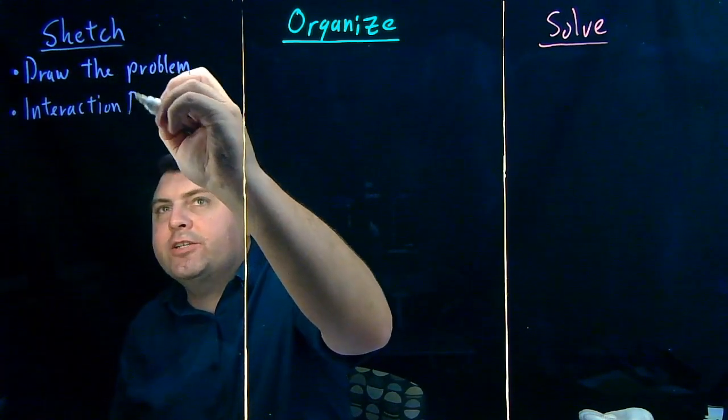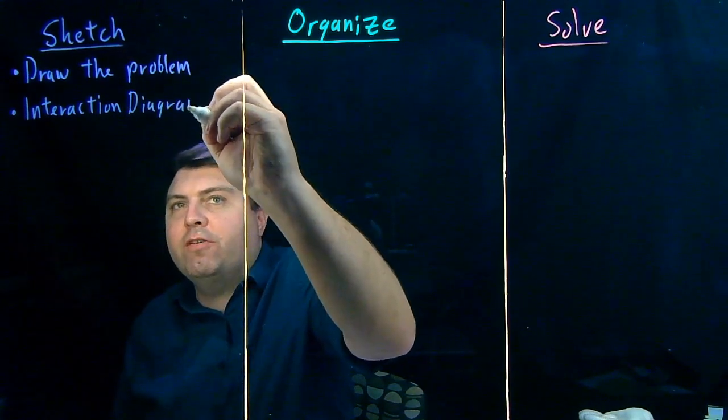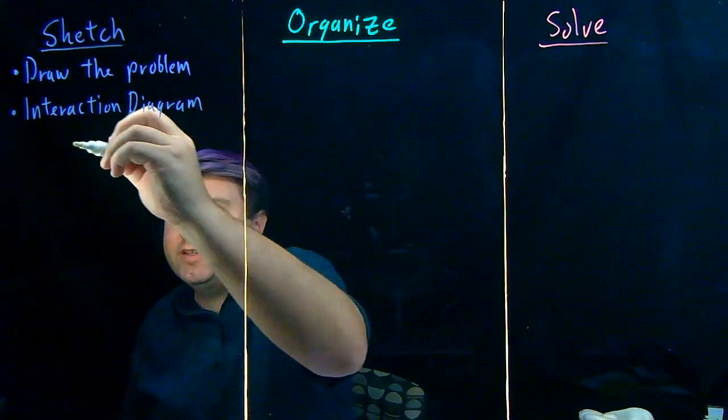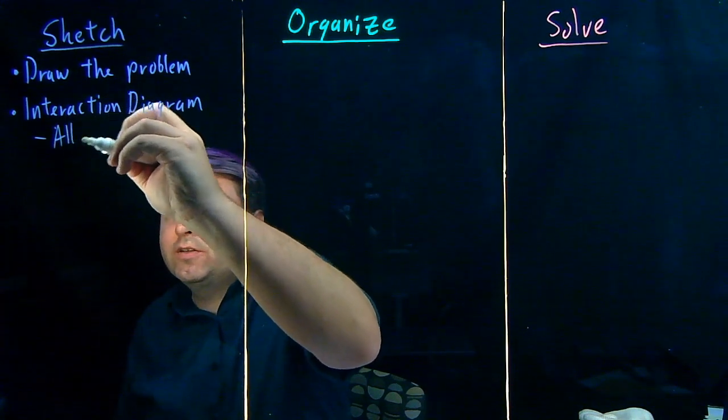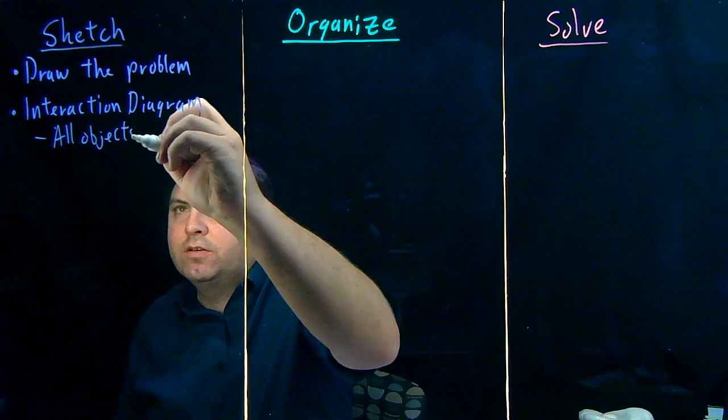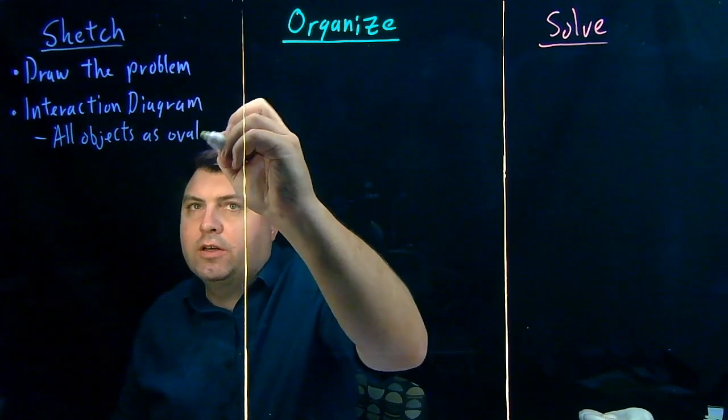For the interaction diagrams, we have a whole other video on how to do them. This is just going to be the basic steps. We want to draw all objects as ovals.